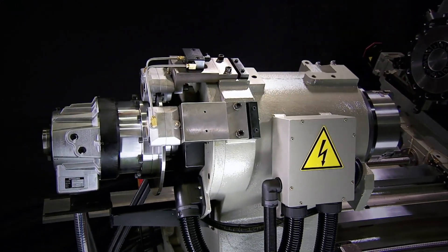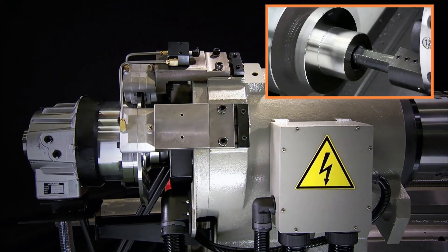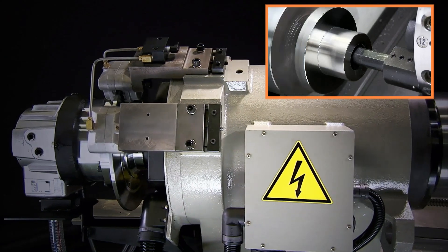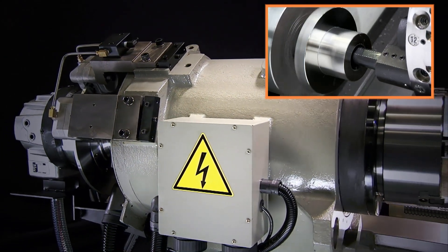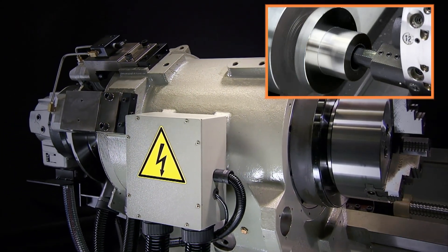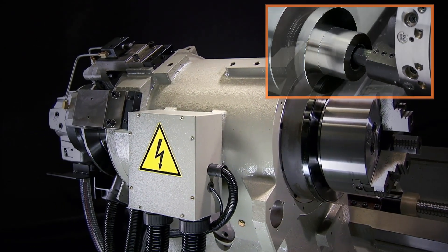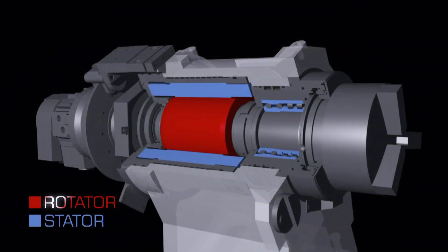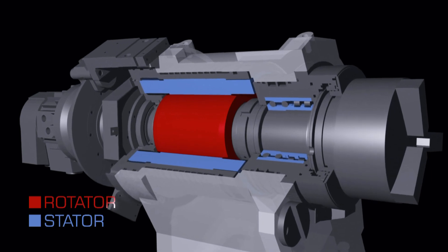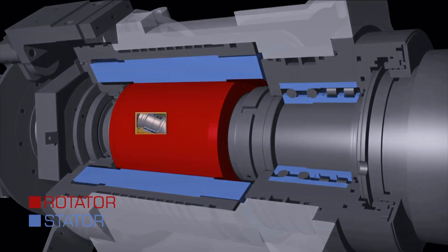The spindle motor is integrated inside the headstock to eliminate the vibrations from the belt or gear drives. This improves the spindle runout and leads to greater surface finish and roundness. The integral unit has lower inertia than traditional drives to allow faster acceleration time and to improve overall efficiency.